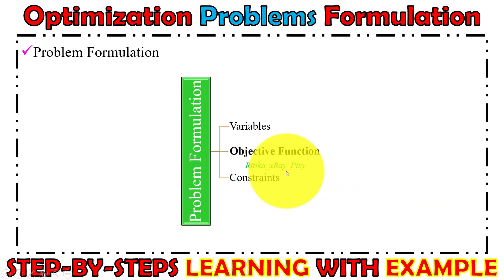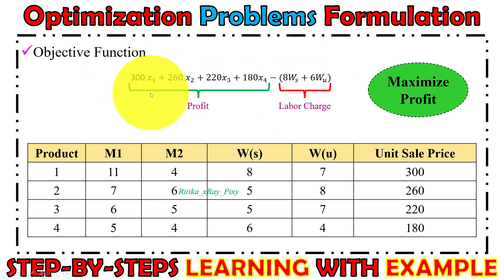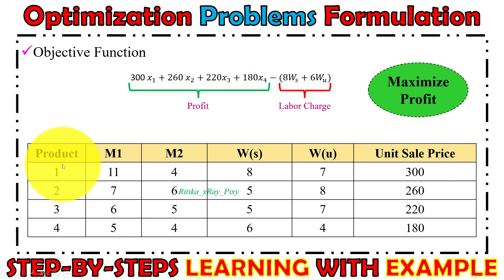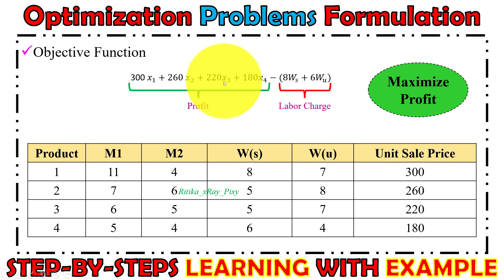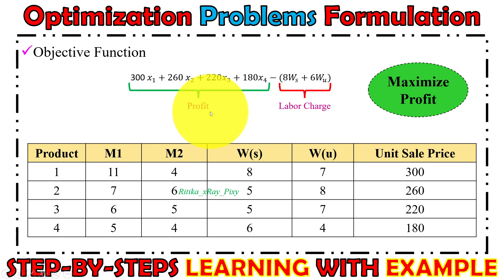Next, we define the objective function that we want to maximize. We will determine the values for x1, x2, x3, x4, w_s, and w_u. The objective function expresses company profit: 300x1 + 260x2 + 220x3 + 180x4 minus labor cost, where skilled workers are purchased at $8 per hour and unskilled at $6 per hour. So company profit equals total revenue minus workers cost.